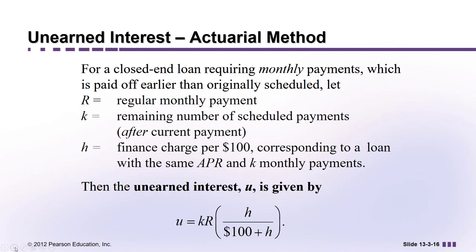Here's what we need to know for the actuarial method of calculating unearned interest for a closed-end loan requiring monthly payments, which is paid off earlier than the originally scheduled loan term. Capital R is the amount of the regular monthly payment — for example, if you're paying $150 a month, that would be R.